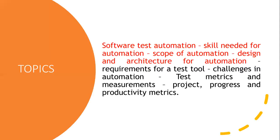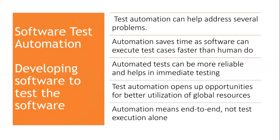Good morning all. Today we are going to see software testing through Unit 5. Topics covered in this video session are software test automation, skill requirements for automation, scope of automation, and design and architecture for automation. In Unit 5 we are going to see only automation, metrics, and measurements. Whatever is shown in red we are going to see today. The first topic is software test automation.